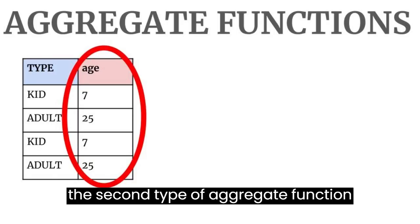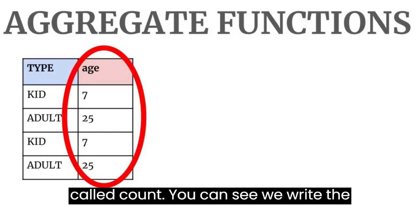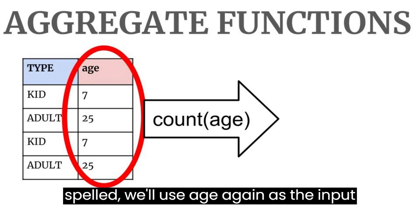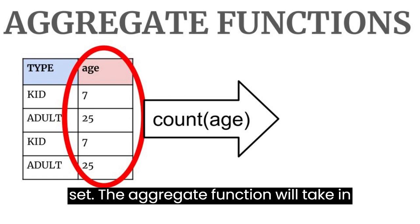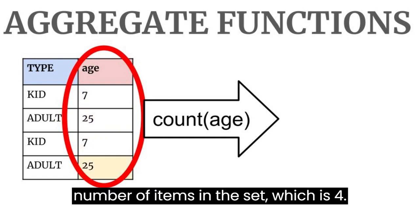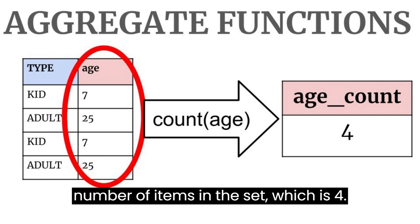Let's work with a second type of aggregate function, called COUNT. You can see we write the function out just as the word COUNT is spelled. We'll use age again as the input set. The aggregate function will take in the inputs one by one and then yield the number of items in the set, which is 4.